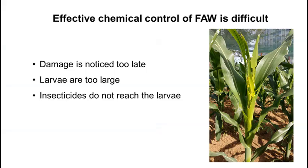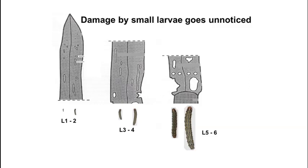The reasons are that damage is noticed too late. You can see that lesions on the leaves of this plant are very big, meaning the larvae are too large to be controlled by means of a chemical. And because of the frass and leaf shape, insecticides do not reach the larvae deep inside the whorl. The reason why insecticides are applied too late is because larval damage goes unnoticed.